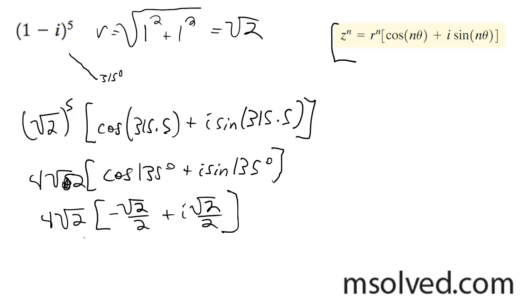Distribute this, we get, it reduces this 2 into 2. We get negative 4. And then we get plus 4i.